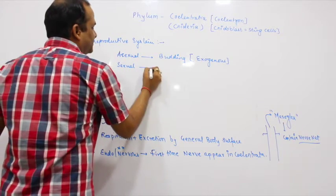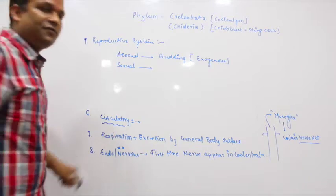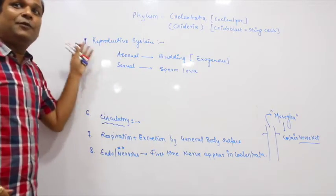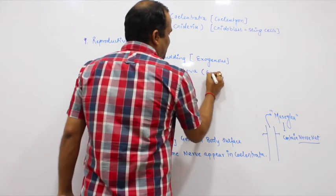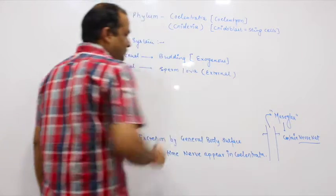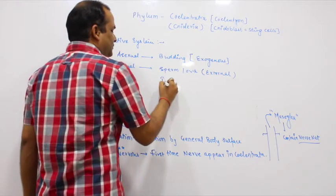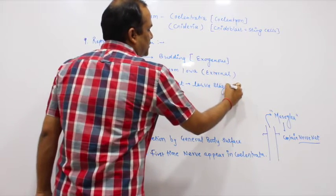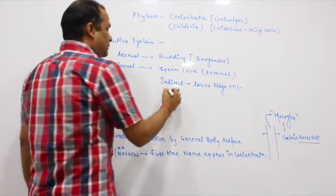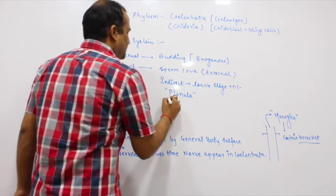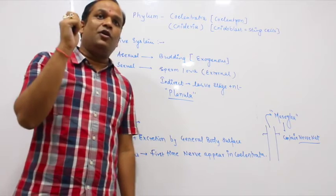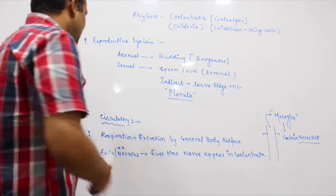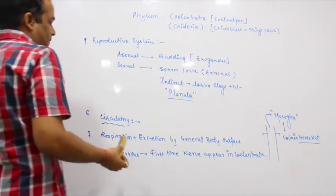Whereas sexual reproduction occurs by sperm and ova. How is fertilization generally? Because they are mostly aquatic organisms, fertilization is external. Development is generally indirect. Indirect means larva stage is present. The common larva of this phylum is planula. Like in porifera we learned about amphiblastula and parenchymula larvae, here the larva is planula.